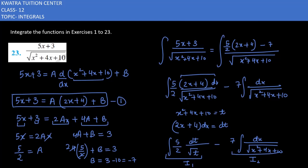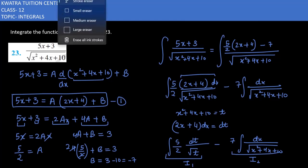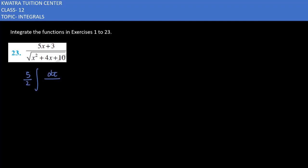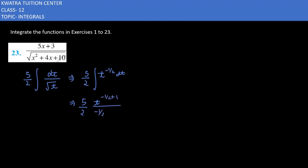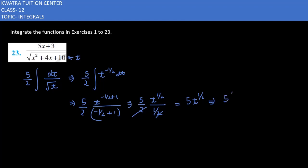Let's find I1 first. The equation becomes (5/2) integral of dt/√t, which is (5/2) integral of t^(−1/2) dt. Integrating: t^(−1/2 + 1) / (−1/2 + 1) = t^(1/2) / (1/2). So I1 = (5/2) × 2 × t^(1/2) = 5√t = 5√(x² + 4x + 10).